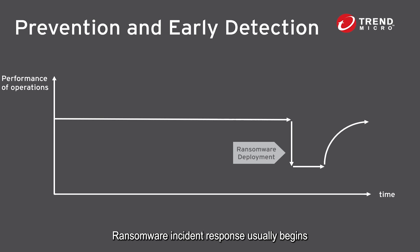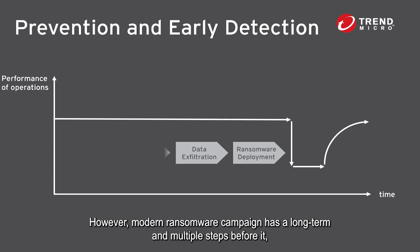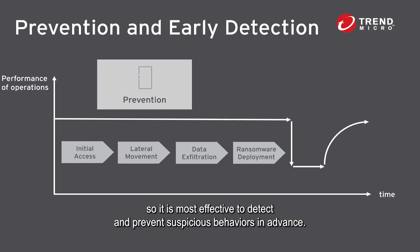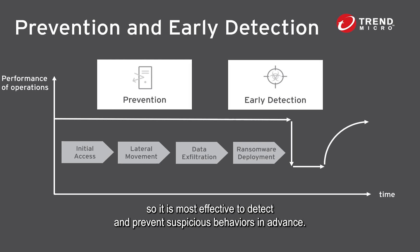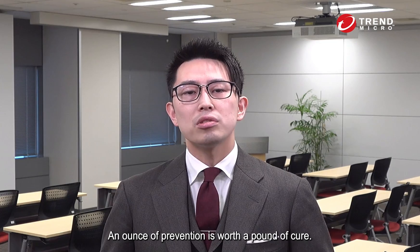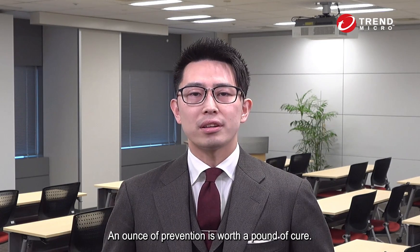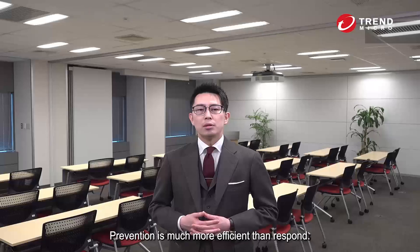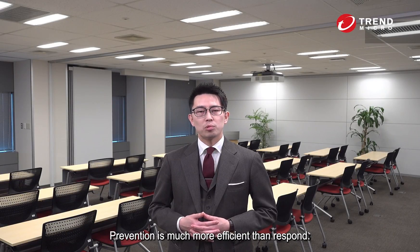Ransomware incident response usually begins when the ransomware program is deployed and executed. However, a modern ransomware campaign has long-term, multiple steps before that point. So it is most effective to detect and prevent suspicious behaviors in advance. An ounce of prevention is worth a pound of cure — prevention is much more efficient than response.